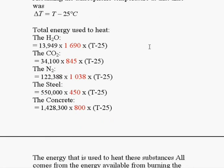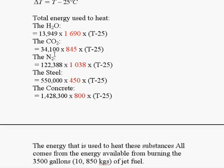The total energy used to heat the water vapor would equal 13,949 multiplied by the heat capacity of the water, which is 1,690 multiplied by delta T, T minus 25. And the same will go for the other materials with their specific heat capacities and their mass.